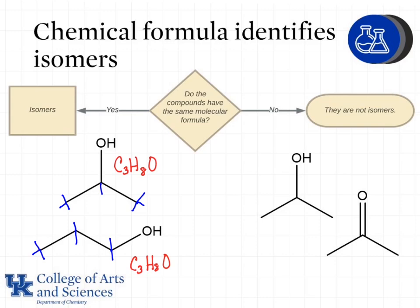On the right side we again see C3H8O for one molecule, but the molecule on the far right has a formula of C3H6O. So the molecules on the right are not isomers because they have a different chemical formula, while the molecules on the left are isomers because they have the same chemical formula.